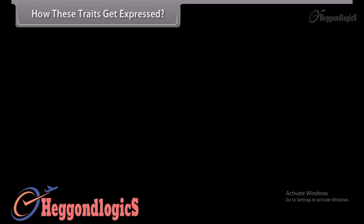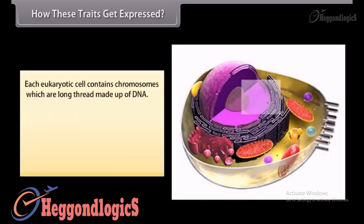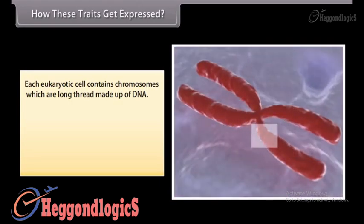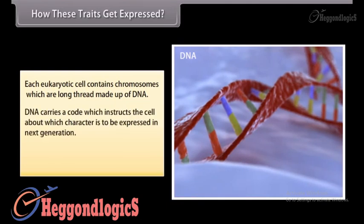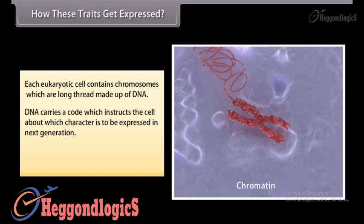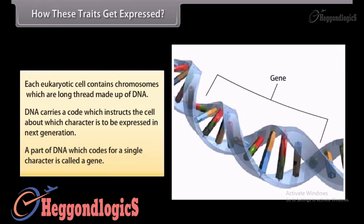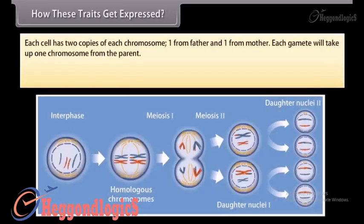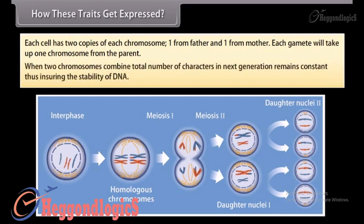Each eukaryotic cell contains chromosomes, which are long threads made up of DNA. DNA carries a code that instructs the cell about which character is to be expressed in the next generation. A part of DNA that codes for a single character is called a gene. Each cell has two copies of each chromosome — one from the father and one from the mother. Each gamete takes up one chromosome from the parent, and when two chromosomes combine, the total number of characters in the next generation remains constant, ensuring the stability of DNA.